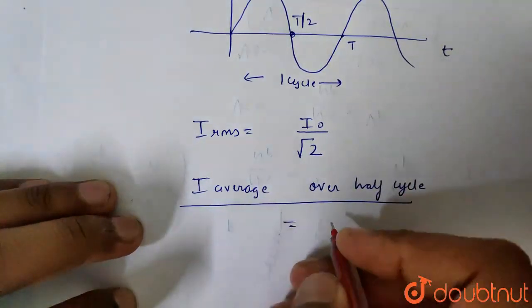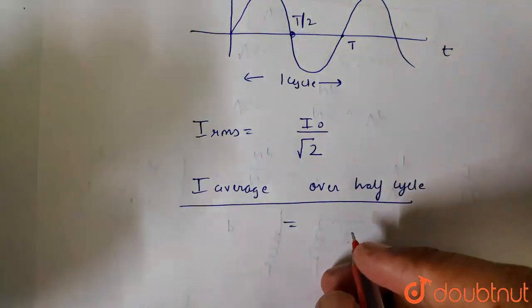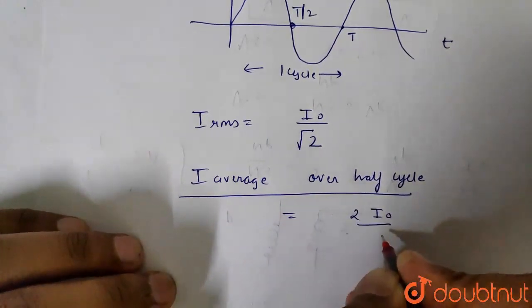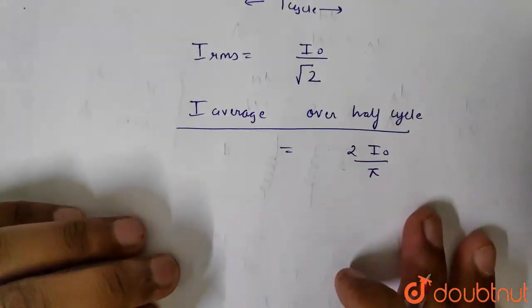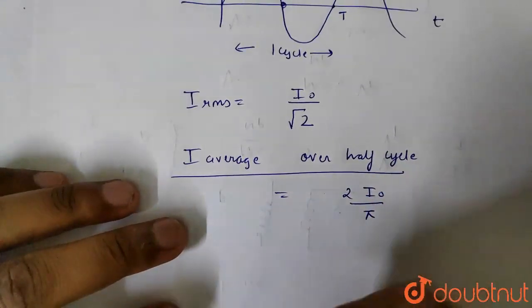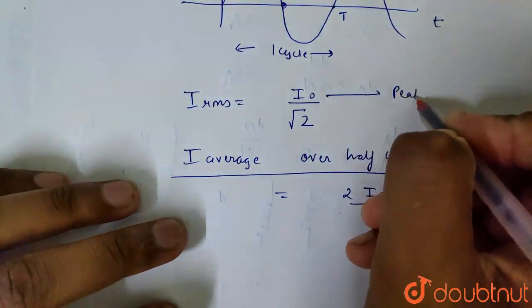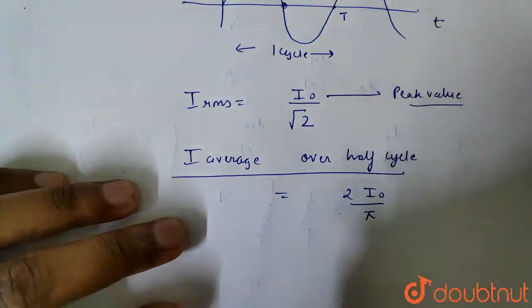Here we know that the RMS value is I0 by root 2. The average value is 2 I0 by pi. This is the peak value - let me write I0, what is peak value.